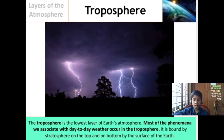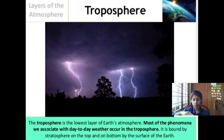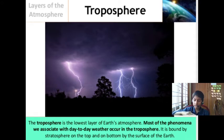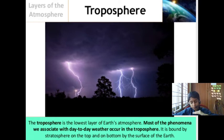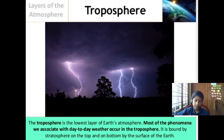Troposphere is the lowest layer of atmosphere. It is bound by stratosphere on the top and the surface of Earth on the bottom. So, troposphere's lower boundary is the Earth's surface and its upper boundary is stratosphere, which is the second layer of atmosphere.